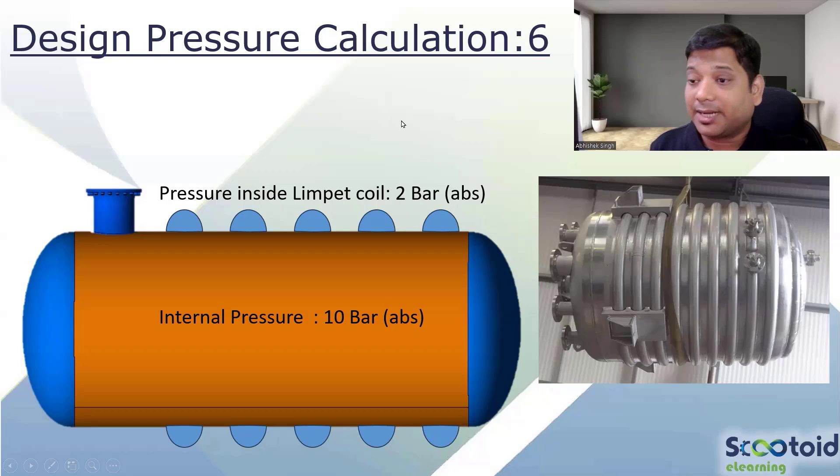So if there are limpet coils, limpet coil is nothing but basically a pipe which is half cut, and welded directly on the shell.